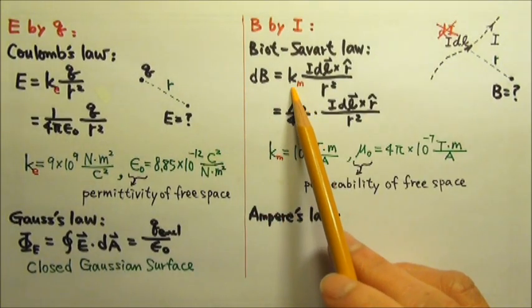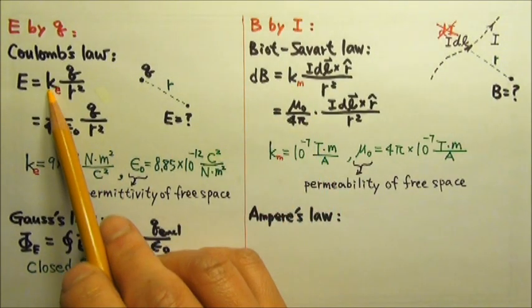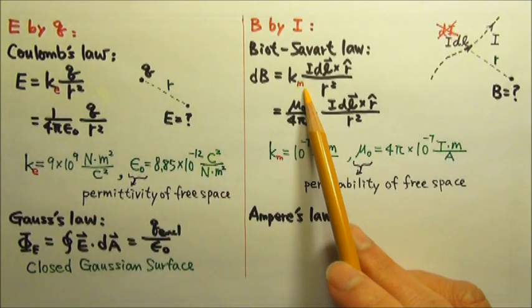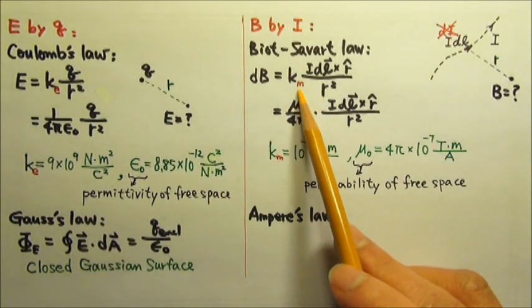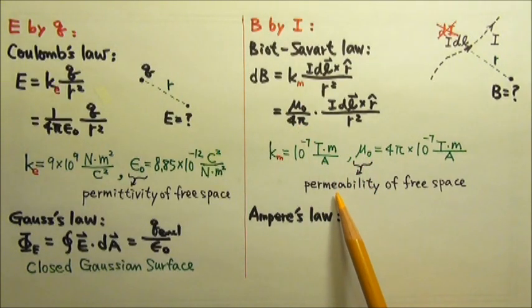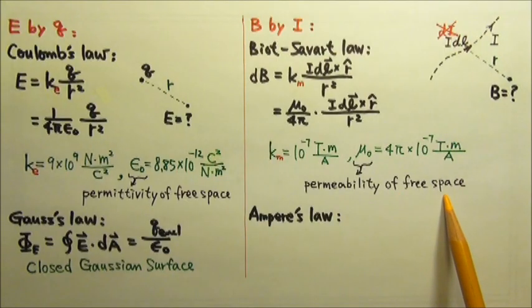And this constant k is not the same as that k. Sometimes we write sub e and sub m to tell them apart. This k for magnetism equals mu naught over 4 pi, and mu naught is called the permeability of free space.